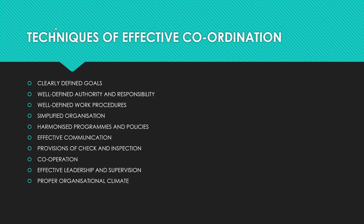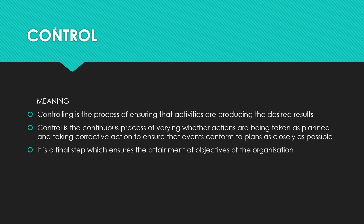Now we can go to the next topic, that is control — a very important question always comes from controlling. Controlling is the process of ensuring that activities are producing the desired results. Control is the continuous process of verifying whether actions are being taken as planned and taking corrective action to ensure that events conform to plans as closely as possible.